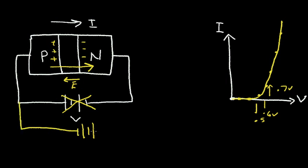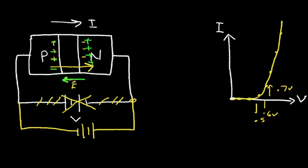I'm going to connect the negative terminal to the P region and the positive terminal to the N region. In this case, I'm creating a positive region in the N by applying this external voltage, and in effect I am reinforcing the electric field that was built into the junction, and I'm making this depletion region wider.